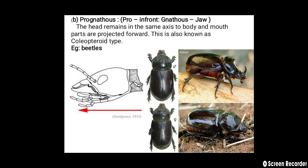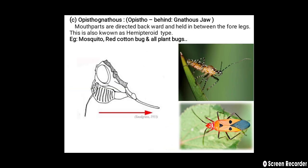The second head position is prognathous — 'pro' means in front and 'gnathus' means jaw. The head remains in the same axis as the body and mouth parts are projected forward. This is also known as the hemipteroid type. Examples include mosquito, red cotton bug, and all plant bugs included in the prognathous head position.